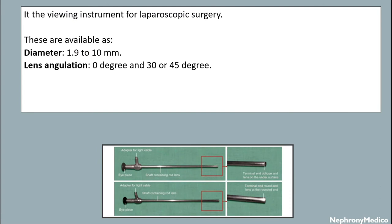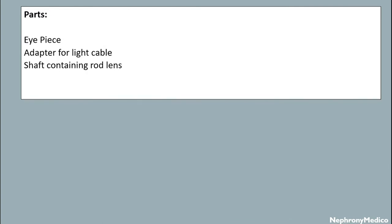It is a viewing instrument for laparoscopic surgery. These are available in diameters of 1.9 to 10 mm and lens angulation of 0 degrees to 30 or 45 degrees. It has an eyepiece, adapter for light cable, and shaft containing rod lens.